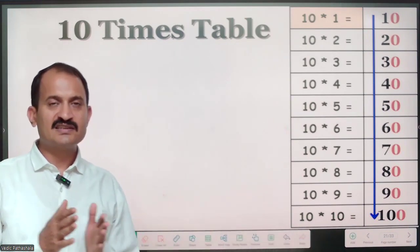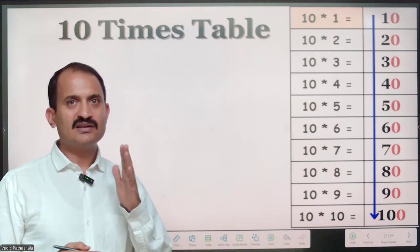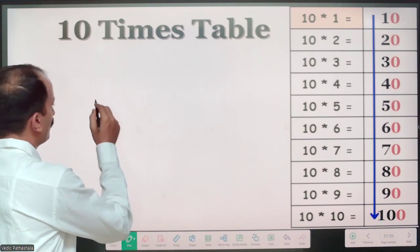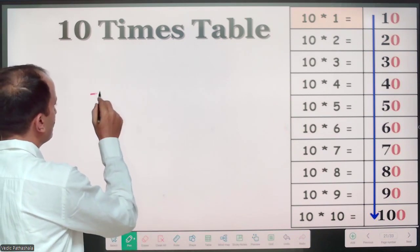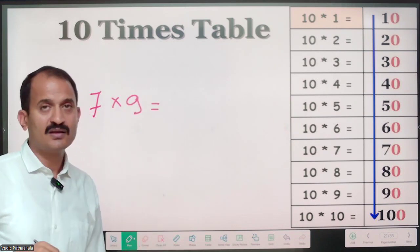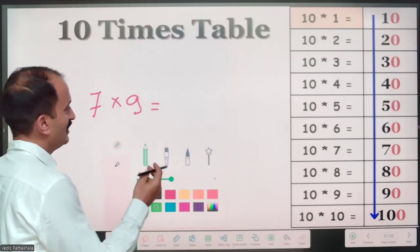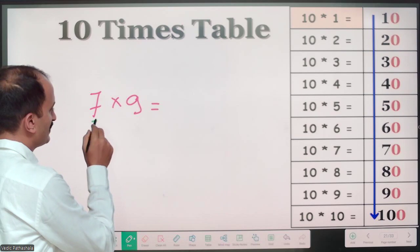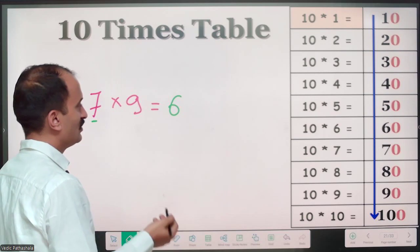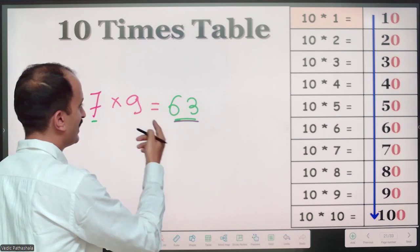Before starting the 10 times table, I will show you how to get the 9 times table or 9s multiplication very easily by calculation. For example, let's find 7 times 9. Your answer should be in 2 digits. The first digit: subtract 1 from 7, giving 6. Then subtract that 6 from 9: 9 minus 6 is 3. So 7 nines are 63.